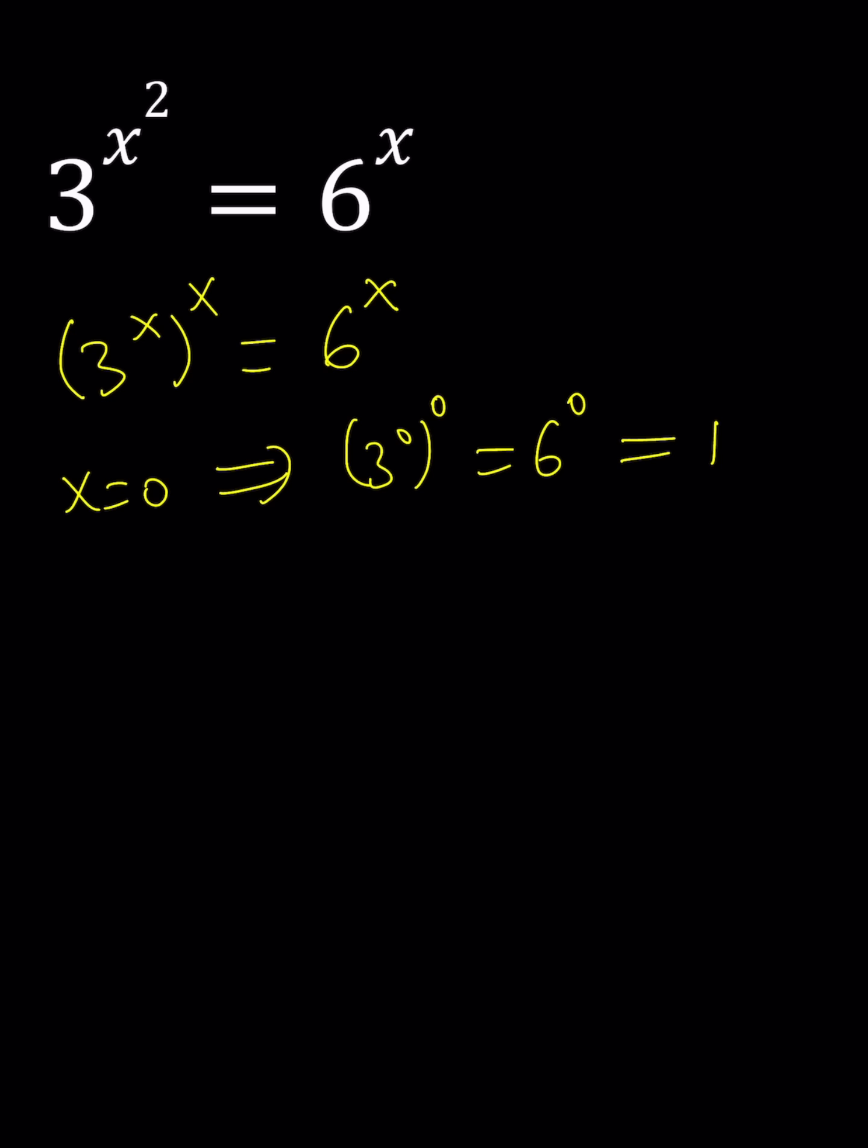And then we're going to assume that what if x does not equal 0 and then we can actually raise both sides to the power 1 over x. In other words go like this and then that'll cancel out the x's. So we're going to end up with something much simpler and this will be 3 to the power x equals 6.